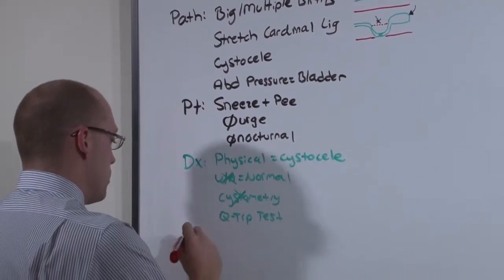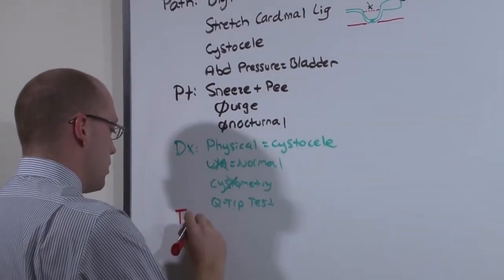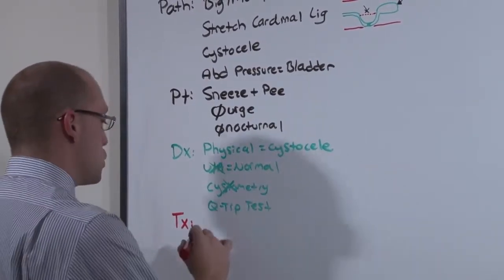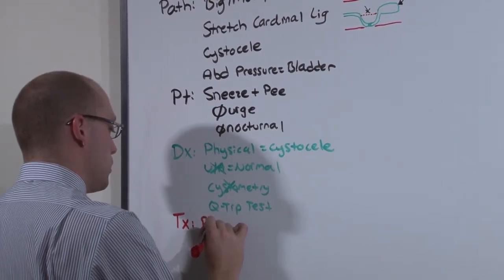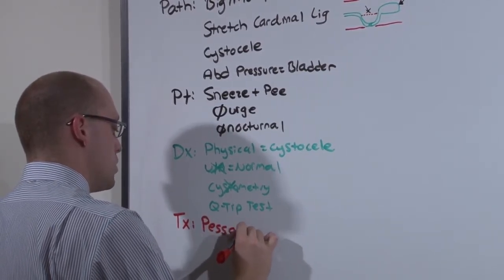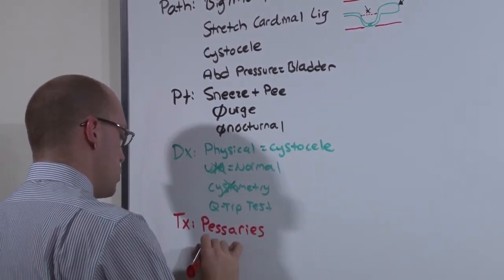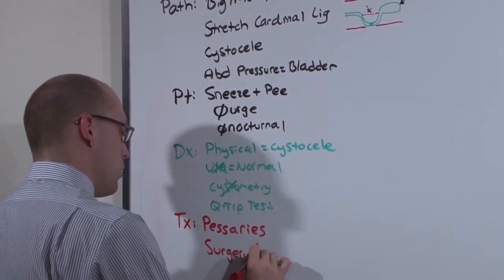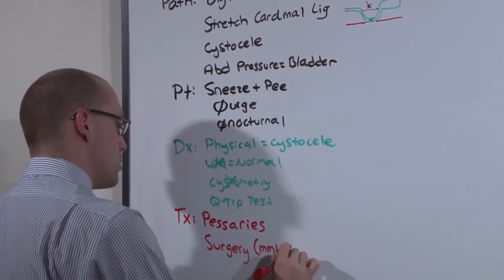The treatment is based on the pathology. Because you have a weakened pelvic floor from the stretching of the cardinal ligament, you can attempt to strengthen the pelvic floor using pessaries. Pessaries generally don't work, and eventually you'll have to rebuild her pelvic floor with surgery, either the MMK procedure or the Burch.